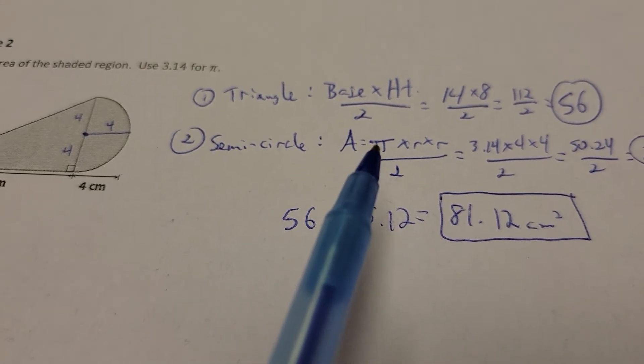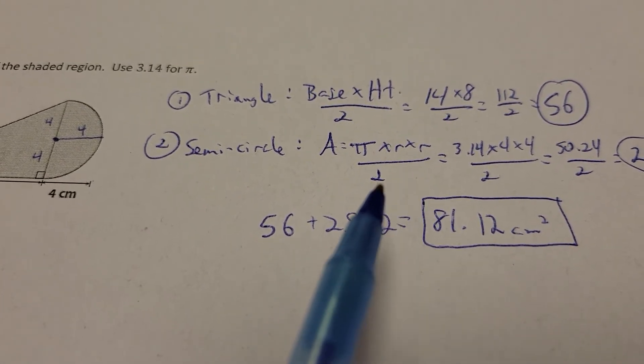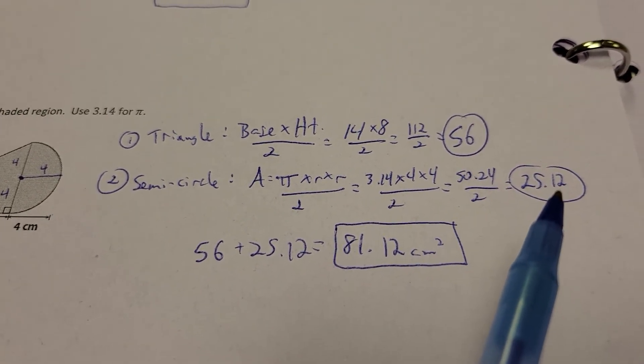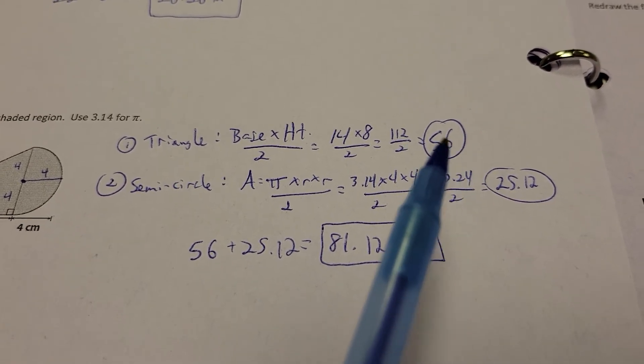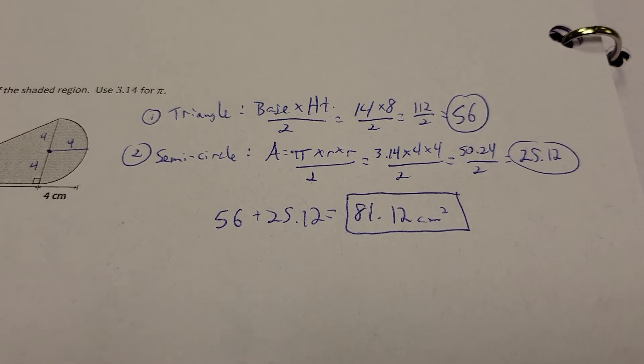The semicircle, remember, it's going to be half a circle, so I'll have to divide by 2. So pi times radius times radius divided by 2. So 3.14 times 4 times 4 divided by 2 gives me 25.12. So there's the triangle, there's the half circle, add them together, 81.12.